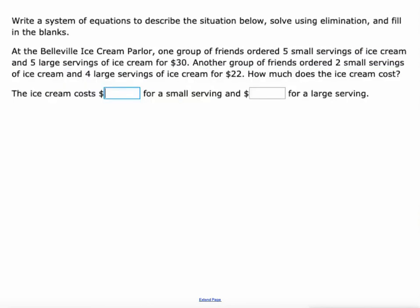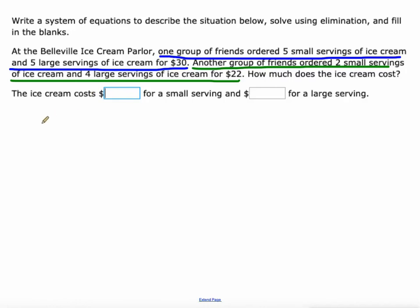Let's do this again. Belleville Ice Cream Parlor: one group of friends ordered five small servings of ice cream and five large servings for $30, so the first group did 5S + 5L = $30. Another group of friends ordered two small servings of ice cream and four large servings for $22. That's enough to make two equations: 5S + 5L = 30 and 2S + 4L = 22.